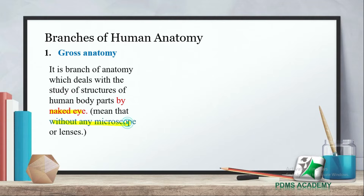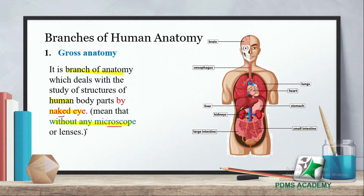In gross anatomy, we identify human body parts and structures with the naked eye, without any microscope. For example, body structures such as the brain, trachea, stomach, heart, liver, kidney, large intestine, and small intestine can all be seen this way. All these things are called gross anatomy.